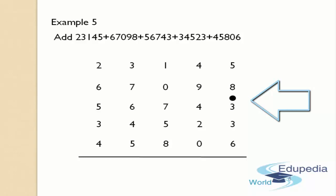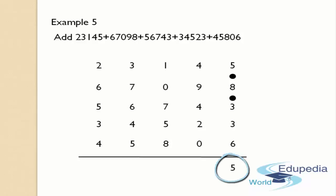2 plus 8 gives 10, which is a two-digit number, so again you have to put a dot on the 8 by leaving 1. The remaining number is 0. Now 0 plus 5 is 5 — write that 5 in the answer's place. Now count the number of dots in the first column: there are 2 dots. This count should be added to the next column, that is the tens column.